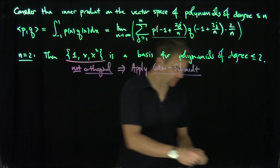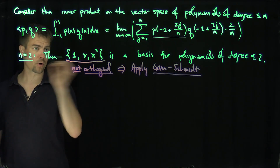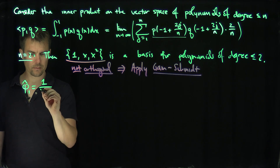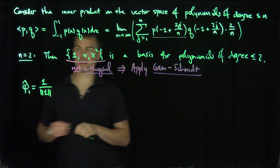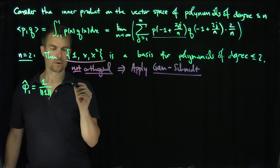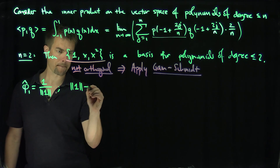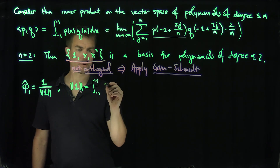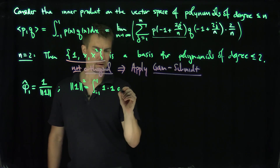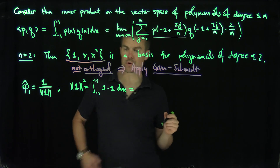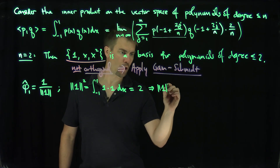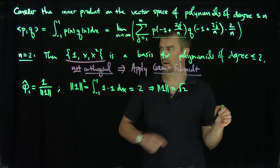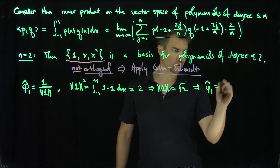So let's apply Gram-Schmidt. The procedure says we take the first basis function to be the normalized function. So φ₁ is just going to be 1 over the length of 1. We compute the length of 1: the length squared is the integral from −1 to 1 of 1·1 dx, which equals 2. So the length of 1 is √2, and our first function is φ₁ = 1/√2.